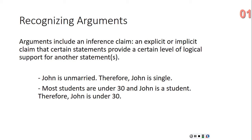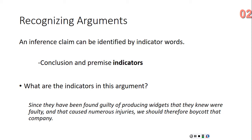This is an explicit claim. If it were implicit, the word 'therefore' would not be there, but the author would still intend an implicit claim that the fact that John is single follows from the fact that John is unmarried. In a second example — 'Most students are under 30 and John is a student, therefore John is under 30' — the premises are 'most students are under 30' and 'John is a student,' the conclusion is 'John is under 30,' and the indicator word is 'therefore,' indicating those statements provide logical support for the conclusion.